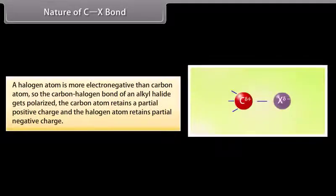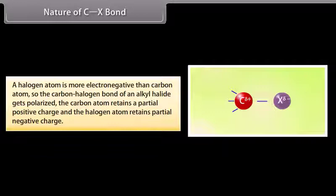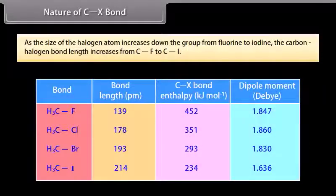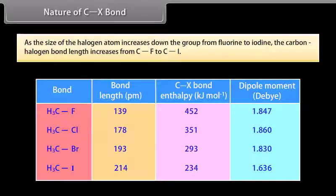A halogen atom is more electronegative than a carbon atom, so the carbon-halogen bond of an alkyl halide gets polarized. The carbon atom retains a partial positive charge and the halogen atom retains a partial negative charge. As the size of the halogen atom increases down the group from fluorine to iodine, the carbon-halogen bond length increases from C-F to C-I.